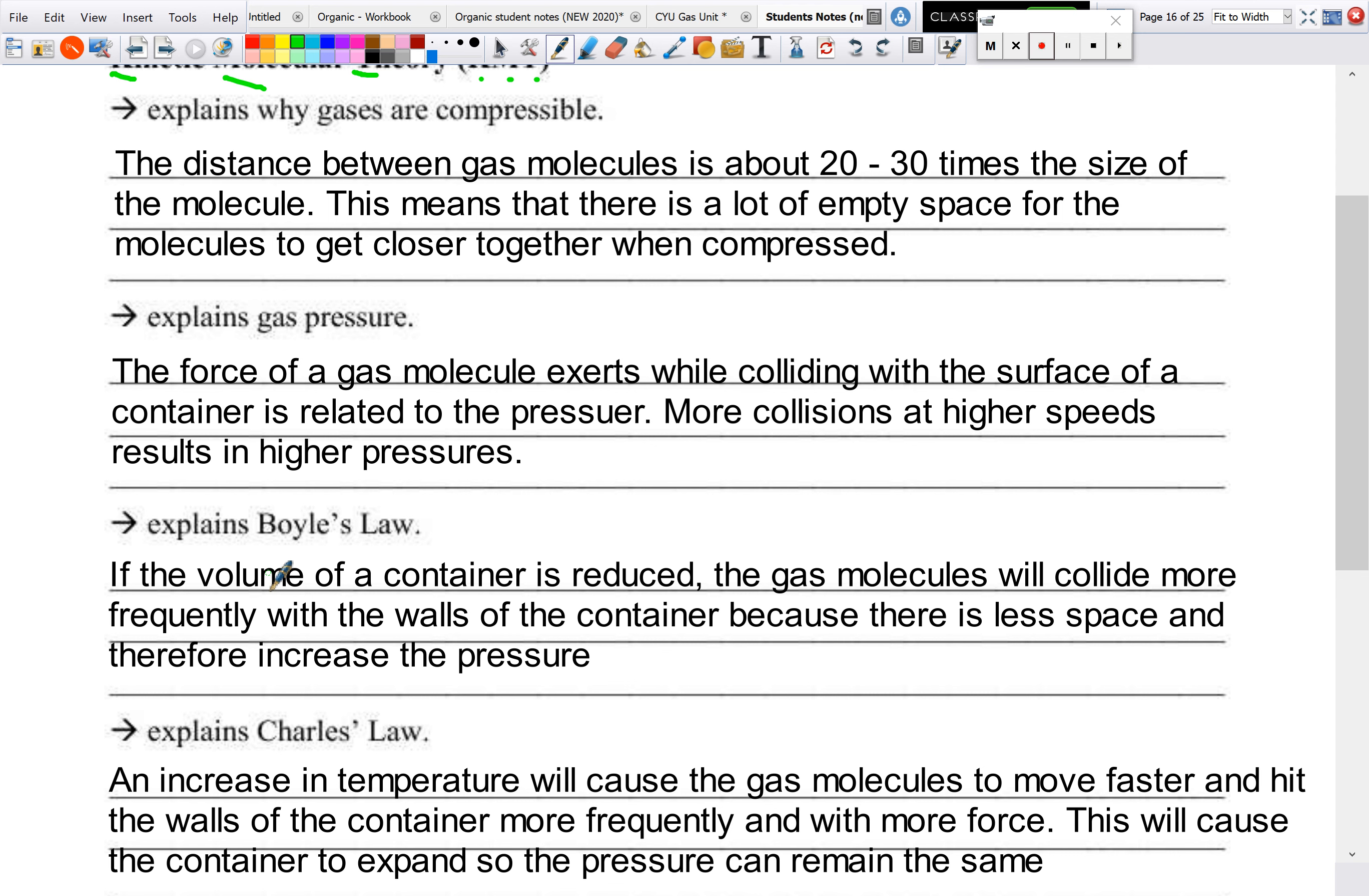So first one, why gases are compressible. What we have right here is the distance between gas molecules is about 30 to 40 times the size of the molecule itself. So this means there's a lot of empty space for the molecules to get closer together when compressed. So as they're moving around, there's so much space in between them, you can actually force them closer together.